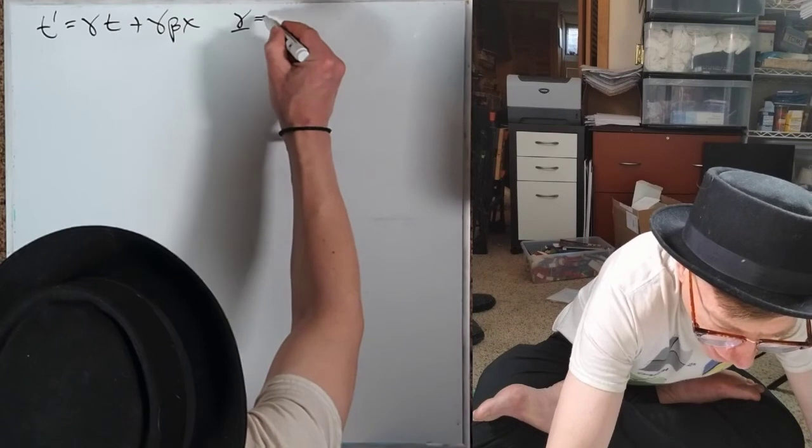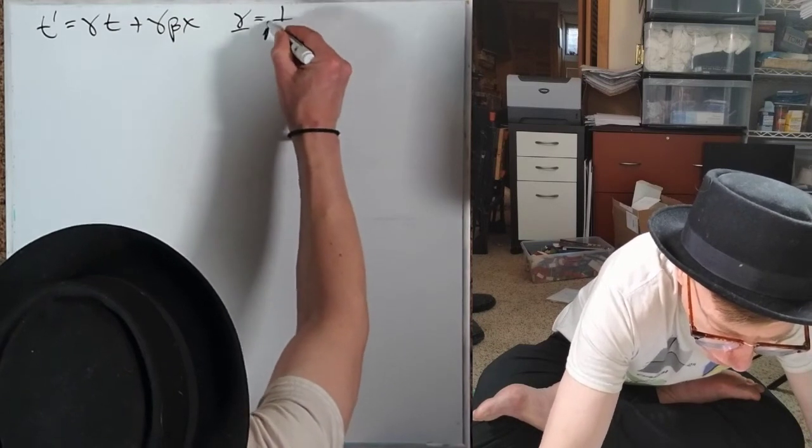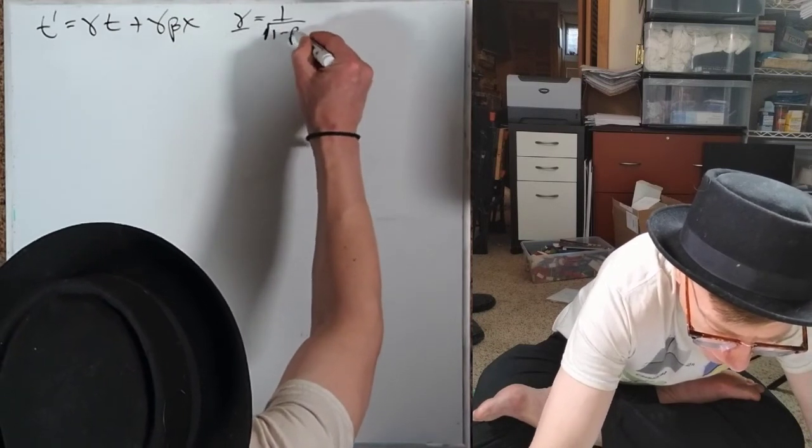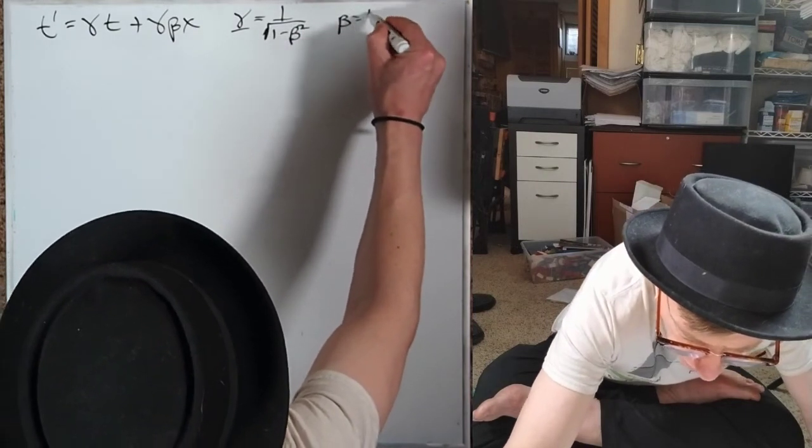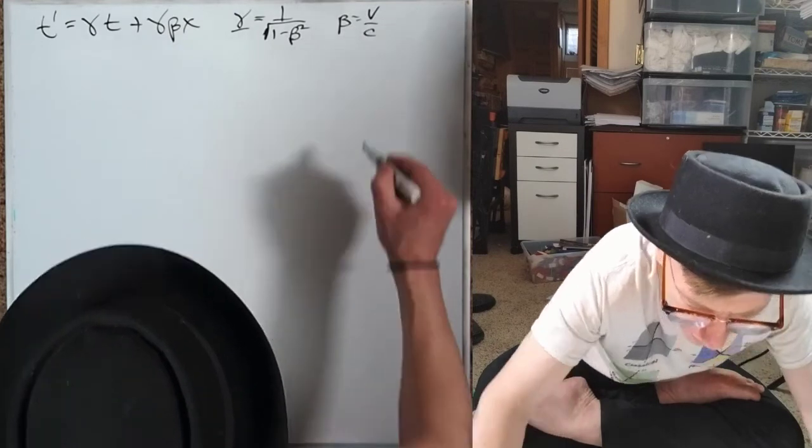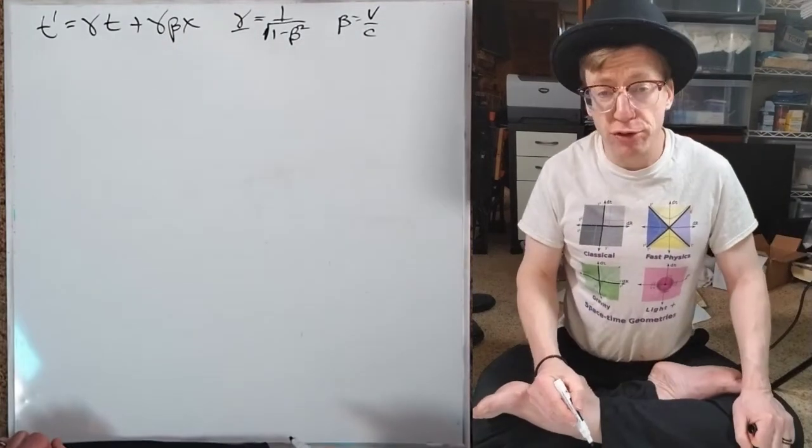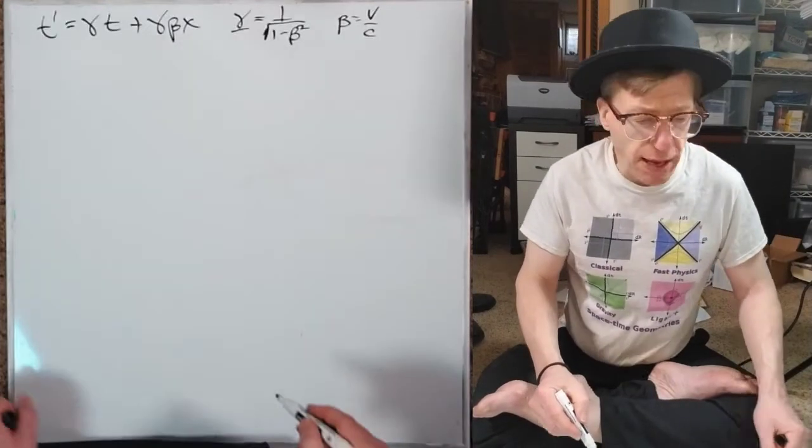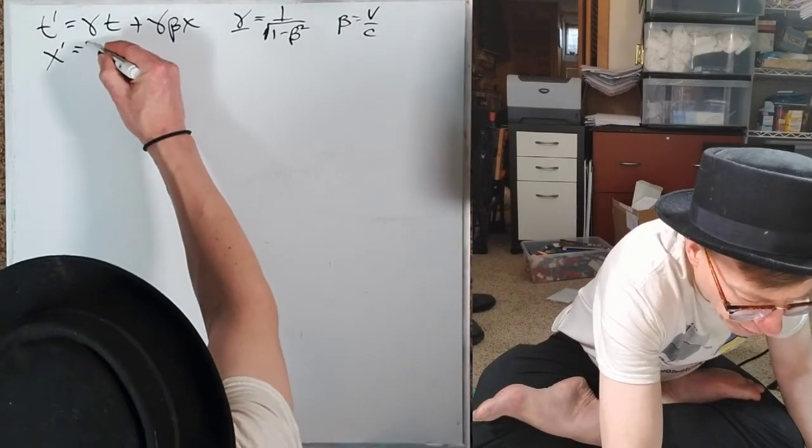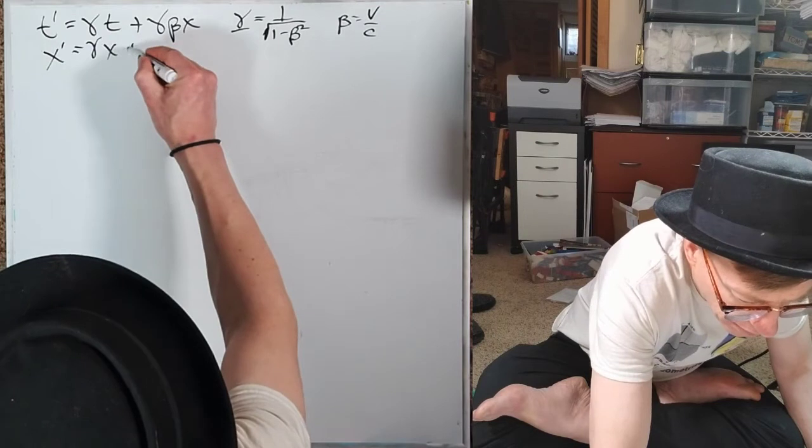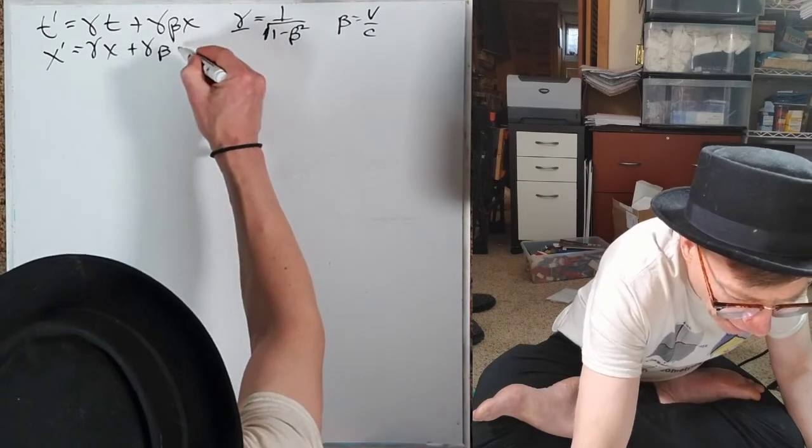Gamma equals one over the square root of one minus a velocity squared. And that beta is in fact a velocity, a dimensionless sort of velocity.